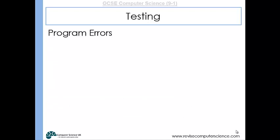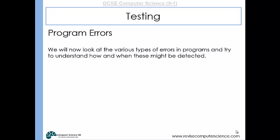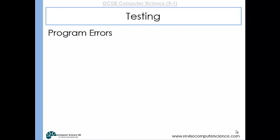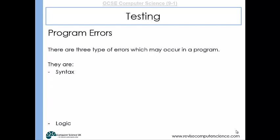So program errors, there are different types of errors that you need to know about for your GCSE. And we'll have a look at each one. So program errors, we've got three main types. We've got syntax errors, we've got logic errors, and we've got runtime errors.